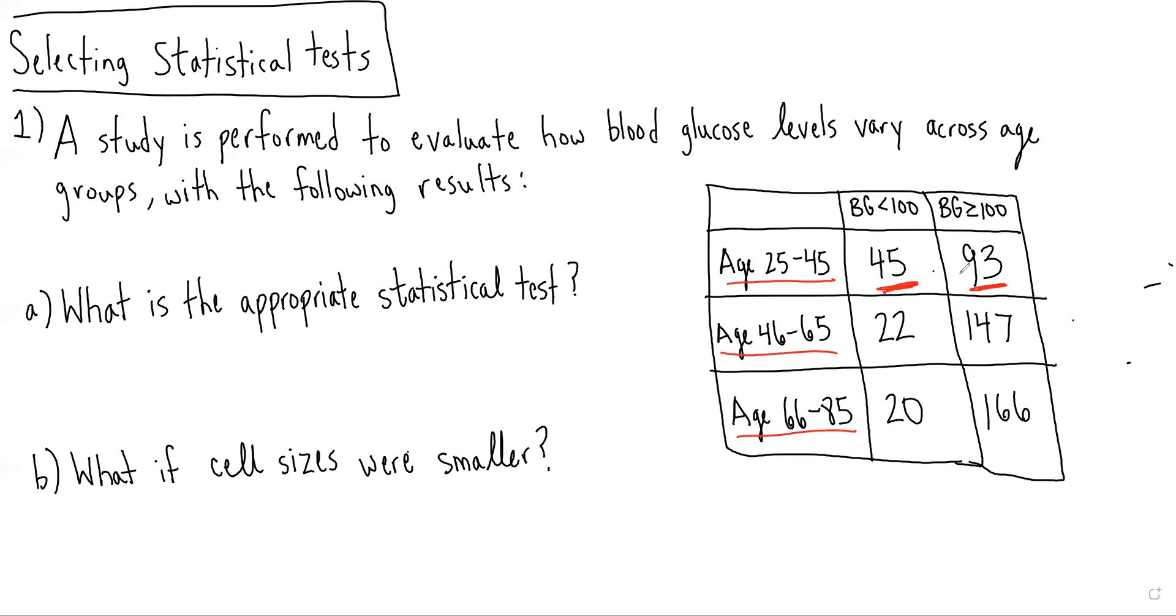If they had provided the actual blood glucose results, and we're comparing means, then we'd be in that scenario. But in this case, we have groups, and we're comparing count data.